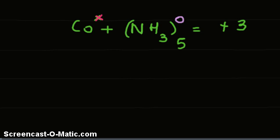Therefore, we write cobalt plus zero, zero times five, equals +3.